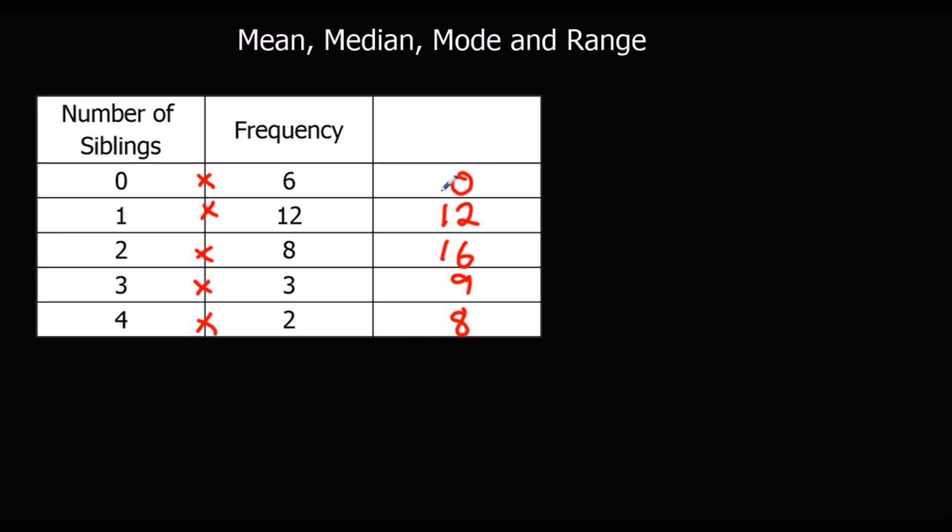So then we add up this column, this is how many in total. So we've got 28, 37, 45.